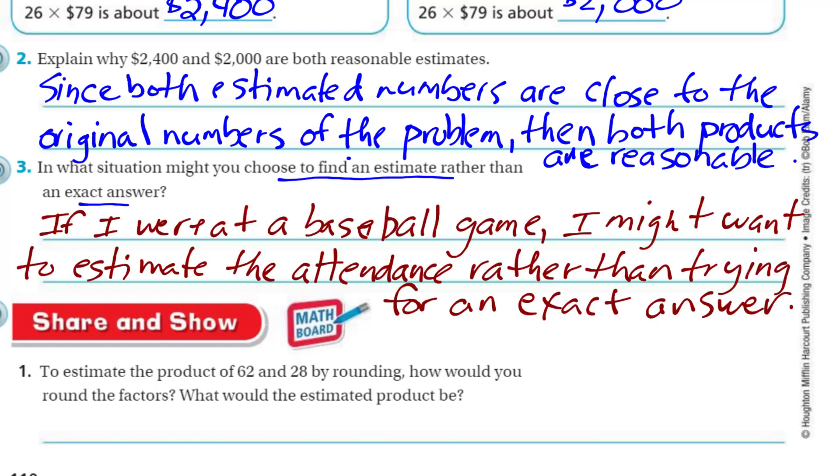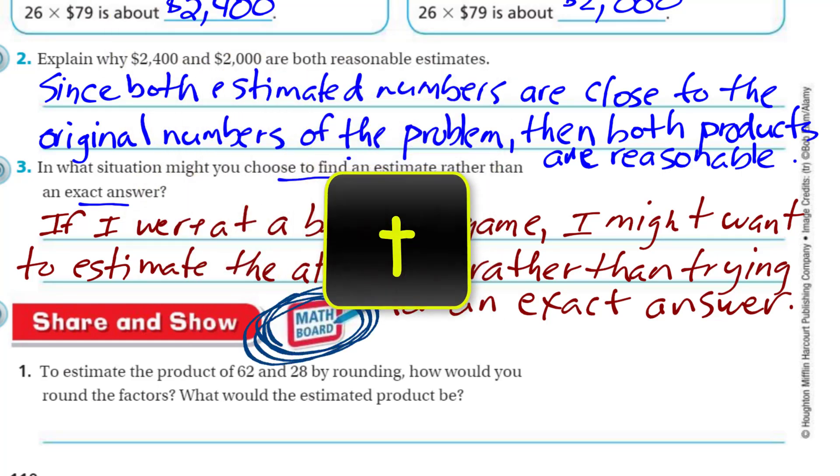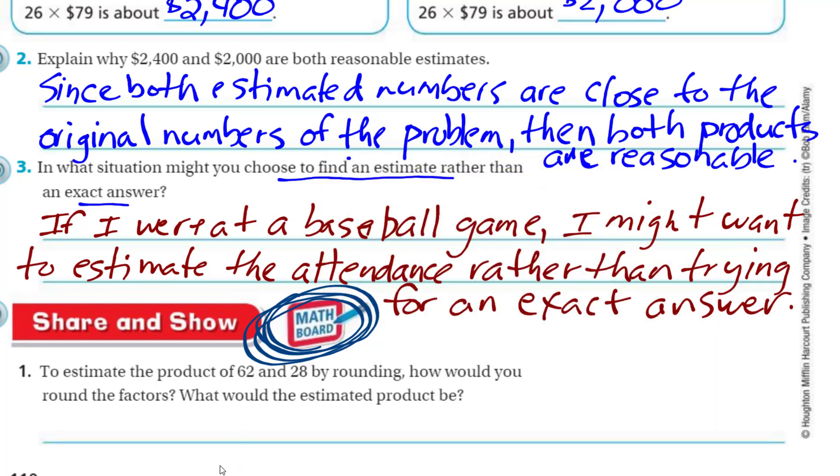Finally, we have a sharing show. Now it says, get the math boards. Yes. Get your math boards, my friends. Now it says to estimate the product of 62 and 28 by rounding. How would you round the factors? What would the estimated product be? Well, that's a great question. 62 is really close to 60 and 28 is really close to 30. So I would round the factors to the nearest 10. 62 times 28, I would say as an estimation would be 60 times 30. What would the estimated product be? Well, my simple facts, six times three, 18. I have two powers of 10 by two zeros, which is 1,800.